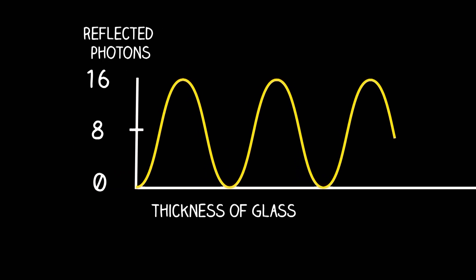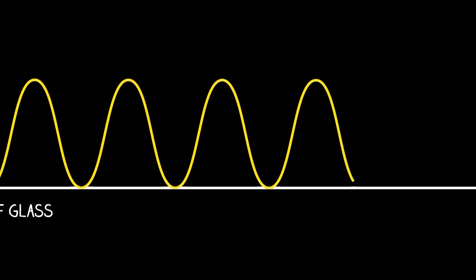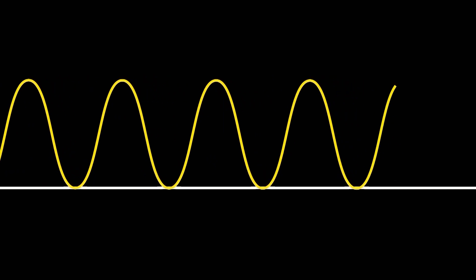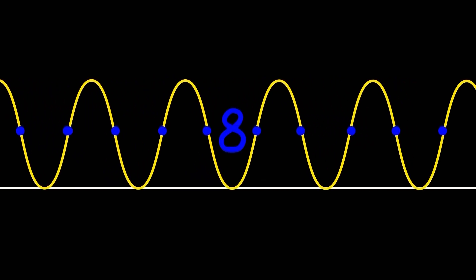What? So remember how we initially thought that 8 photons would be reflected from the two surfaces—4 from each surface? Well, overall it averages out to 8 because it cycles between 0 and 16. But it's only exactly 8 twice every cycle. So what's going on here? How can one surface reflect 4 photons, but adding another surface can either change that to none or four times as many? How does the photon know?